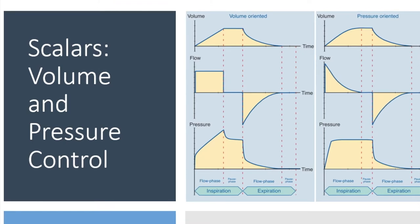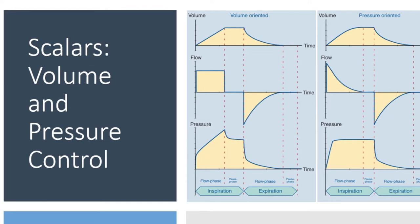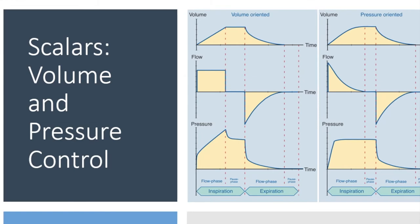Looking at the pressure-oriented style breath: flow starts off very quickly and then starts to decelerate. As the flow starts very quickly, you get to your peak pressure very quickly, then flow decelerates. Even when there's zero flow, the pressure remains the same — you need a lot of flow to initially inflate the lung, then less flow to maintain the pressure, which is why you have this flat-top pressure scalar. At the end of the inspiratory time, you cycle into expiration.